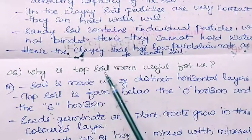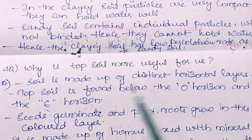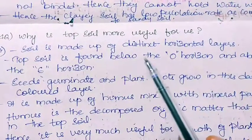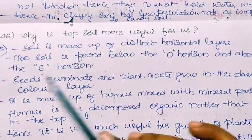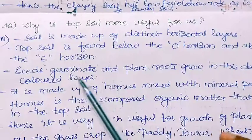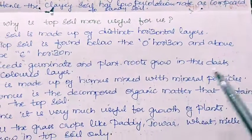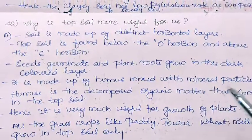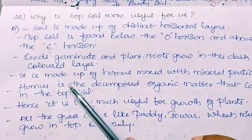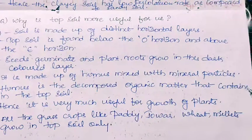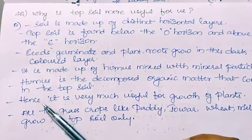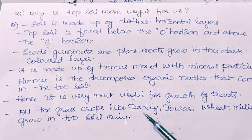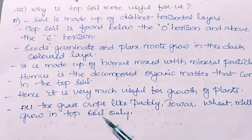Fourth question: Why is top soil more useful for us? Soil is made up of distinct horizontal layers. The top soil is found below the O horizon and above the E horizon. Seeds germinate and plant roots grow in this dark colored layer. It is made up of humus mixed with mineral particles. Humus is the decomposed organic matter contained in the top soil, hence it is very useful for the growth of plants. All crops like paddy, jowar, wheat, and millets grow in top soil only.